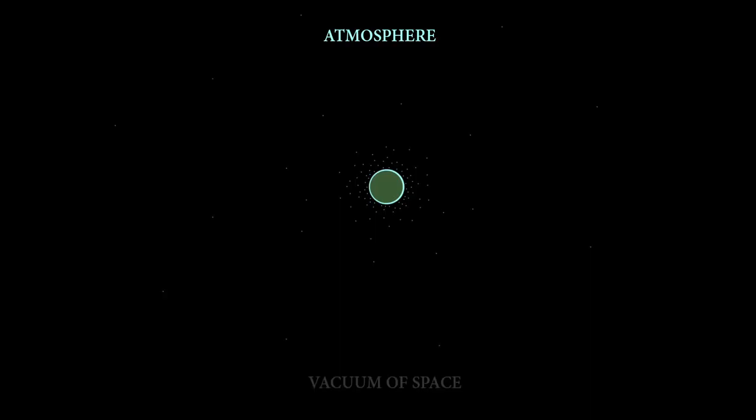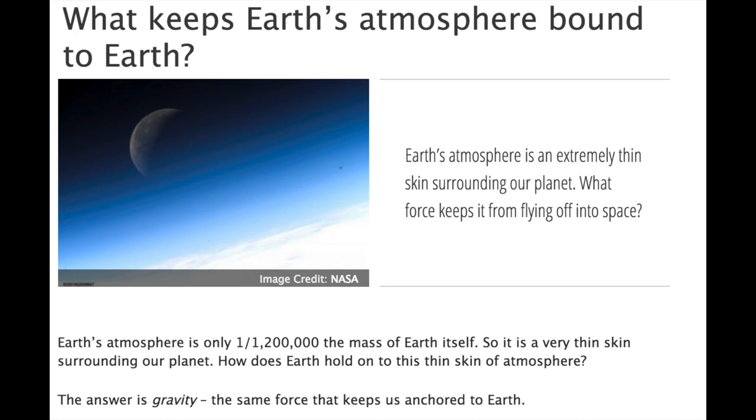So I want to visualize this vacuum. We got our atmosphere in light blue, then we have the vacuum of space, and we're just sitting in a vacuum, right? That's what we're doing, just spinning around in a vacuum. How does the atmosphere not get pulled off? And of course, we already know this is coming. The answer we get is gravity.